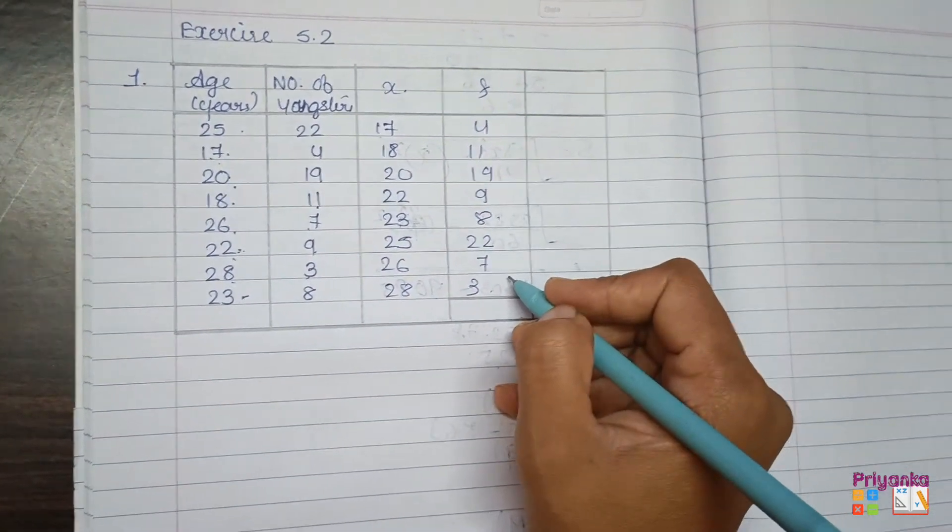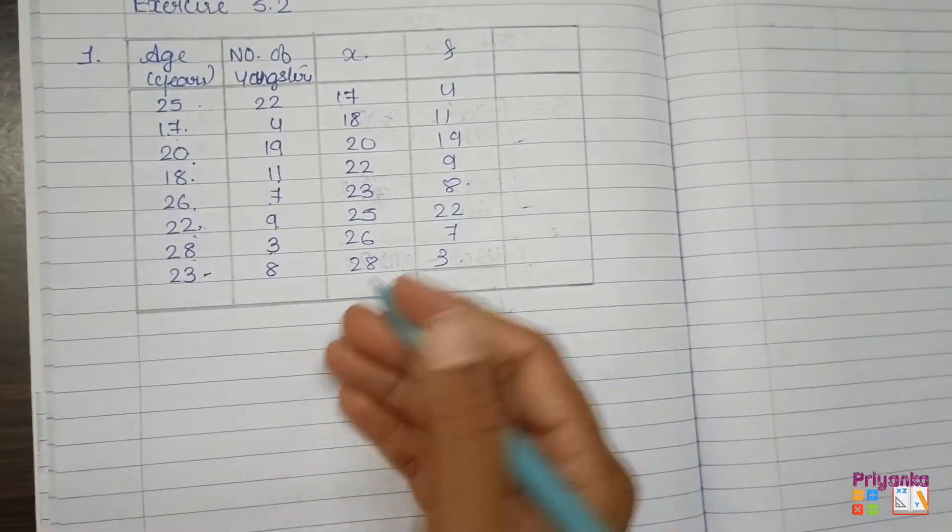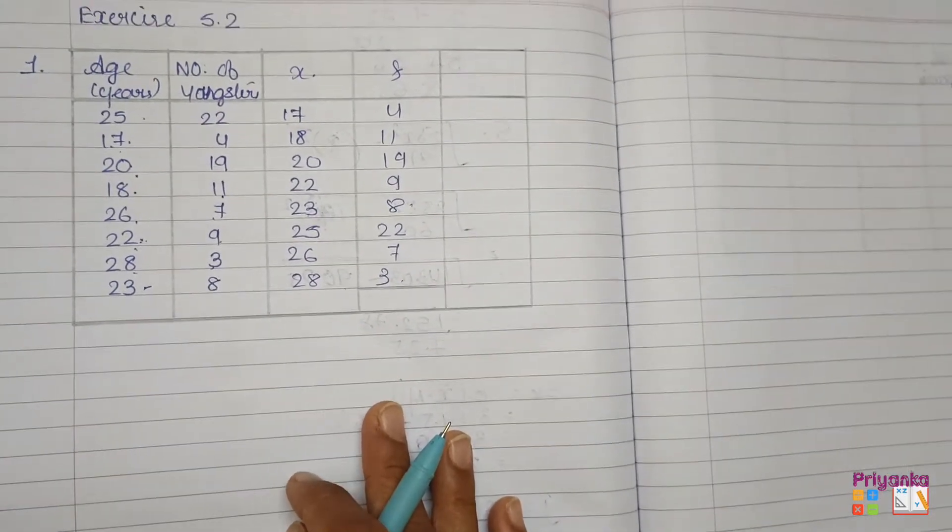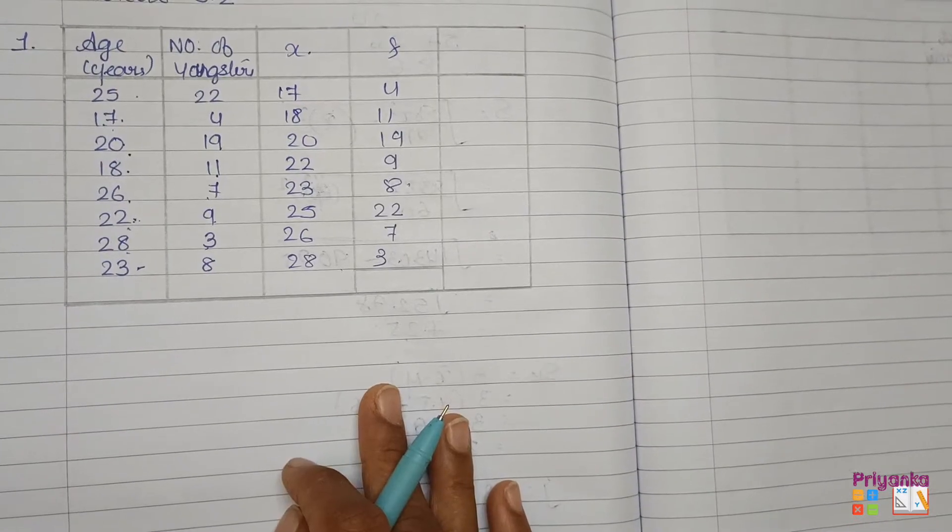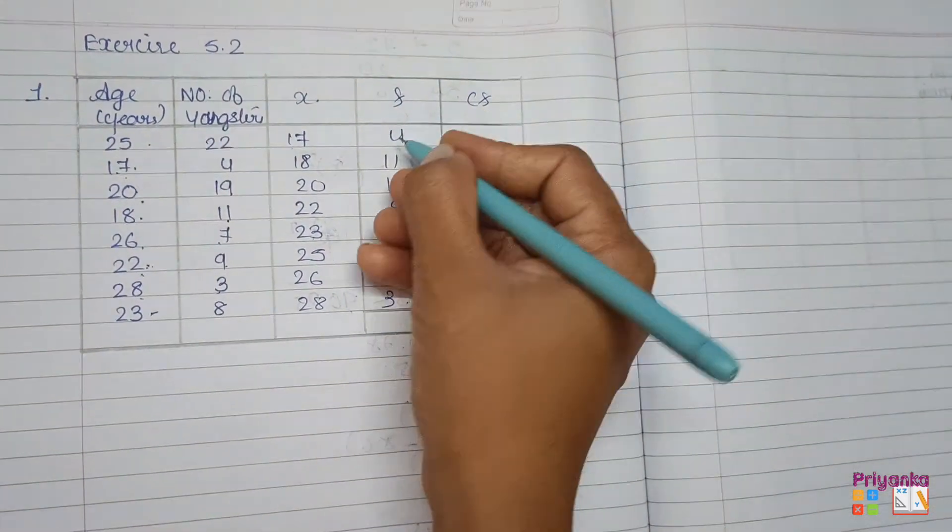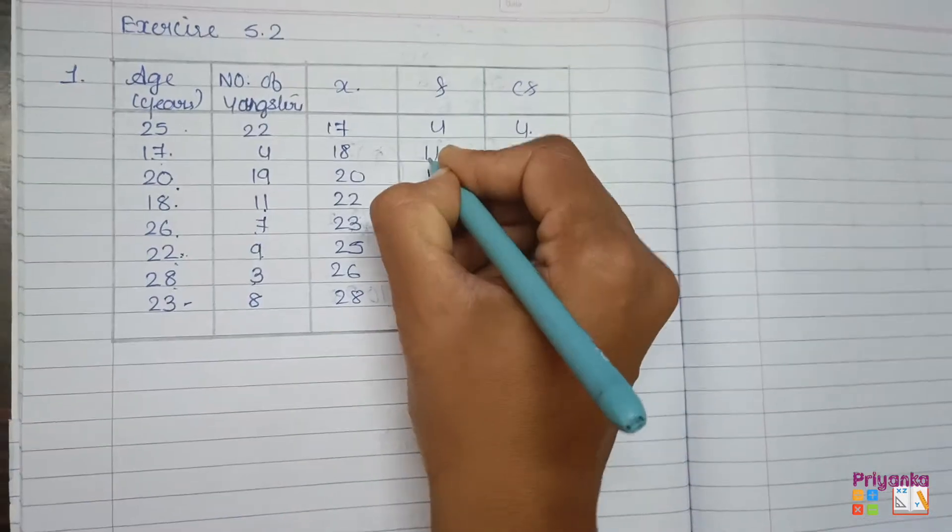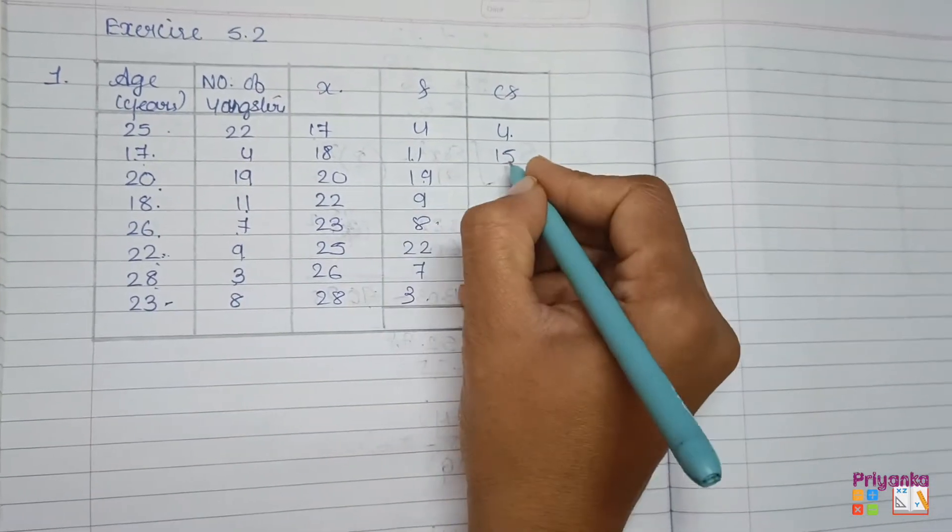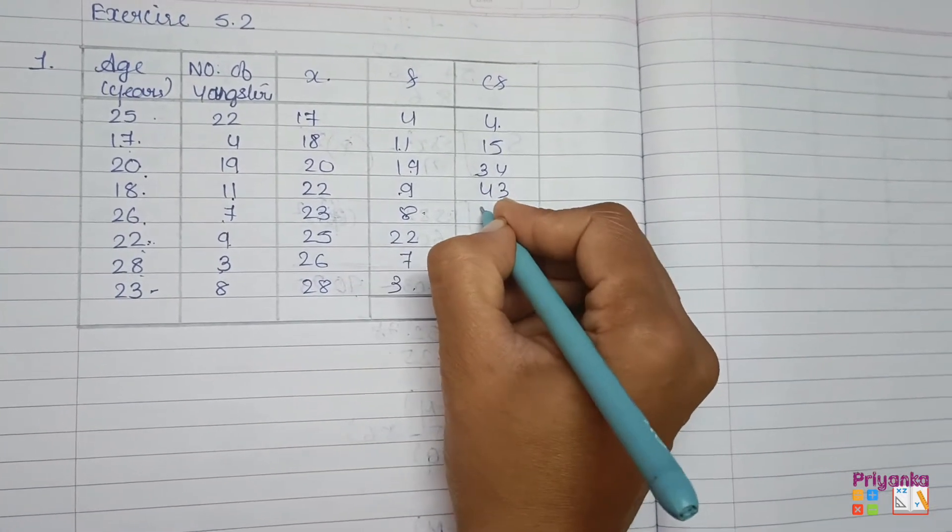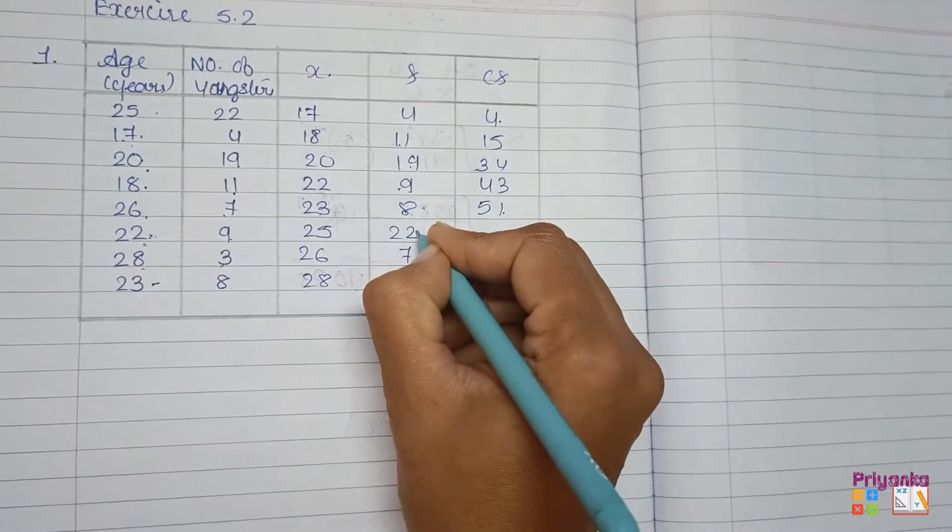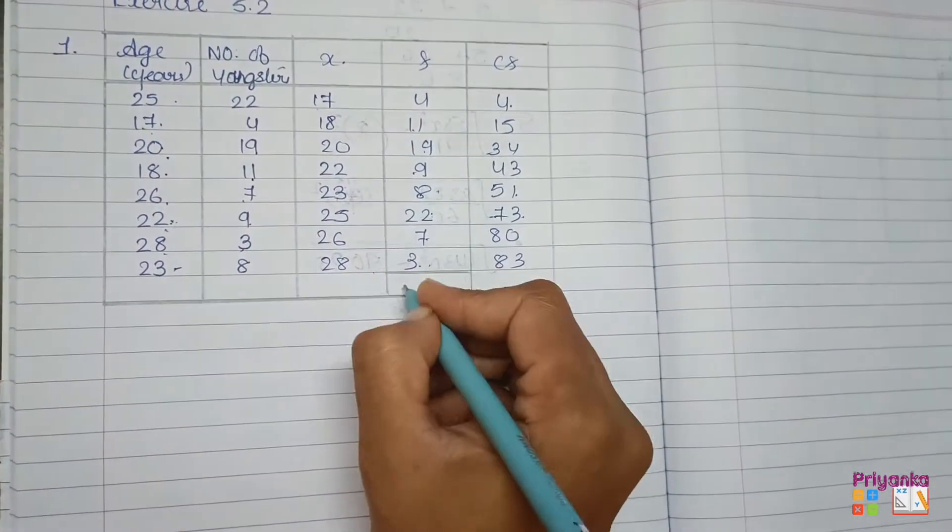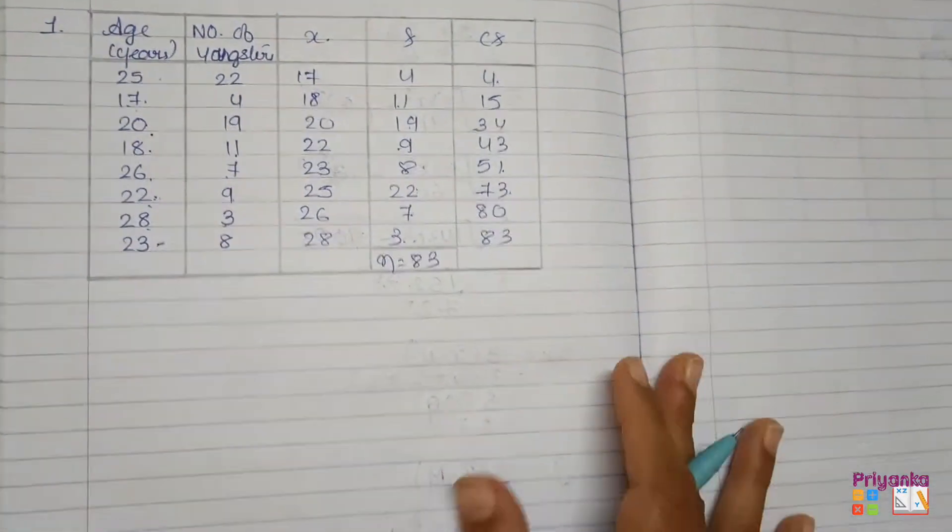Now in the Bowles matter, we don't have to see observation or frequency. We will not keep anything because we will solve the whole calculation in quartiles, and quartiles is same as a median. We only need a CF column, that is a plus of frequency: 4, 4 plus 11 is 15, plus 19 is 34, plus 9 is 43, plus 8 will be 51, plus 22 is 73, plus 7 is 80, and plus 3 will be 83.